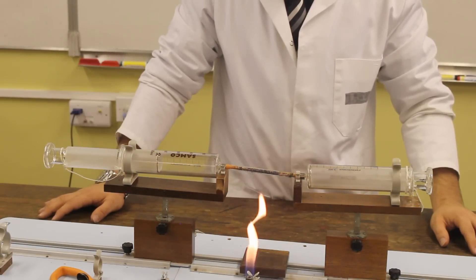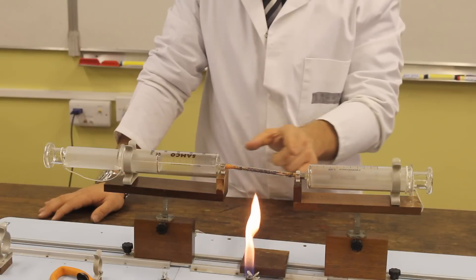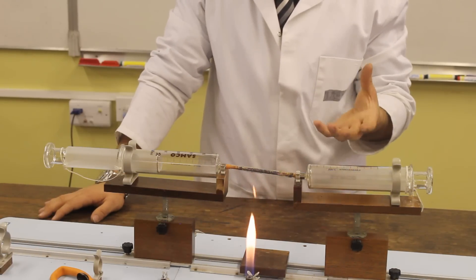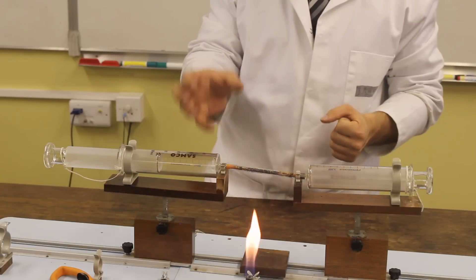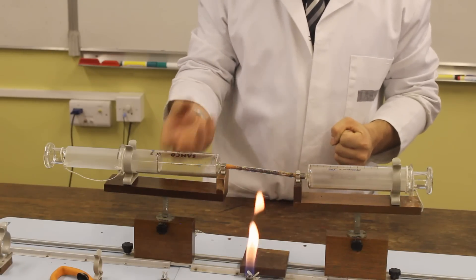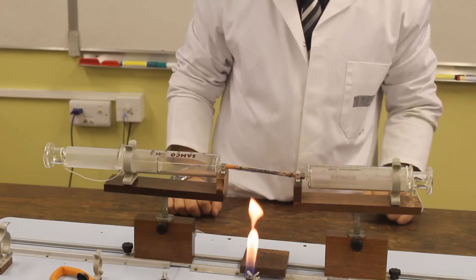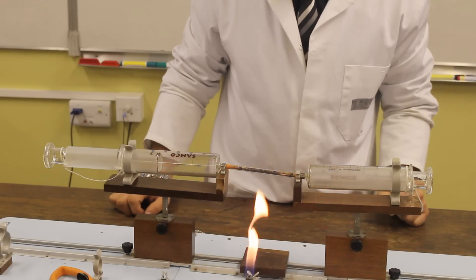Once the reaction is complete, we need to allow it to cool. This is because as we've heated up the air, the air pressure has increased. So actually the volume of the gas at the moment doesn't accurately represent the same volume of gas that we started with because the temperature is different. So once we've allowed it to cool, we'll then be able to read the difference.